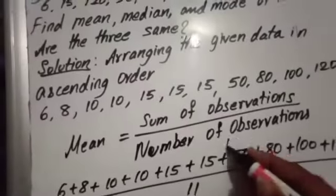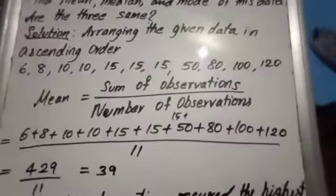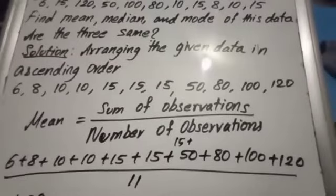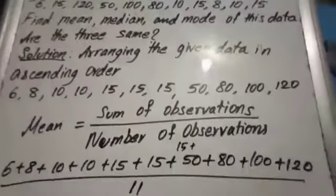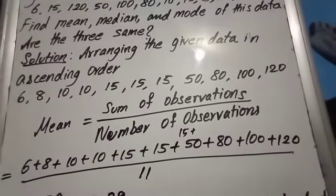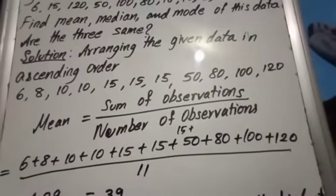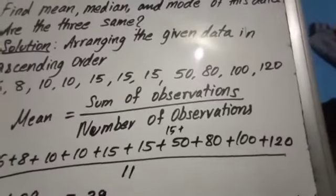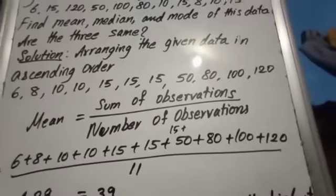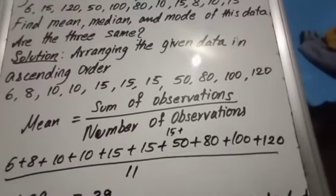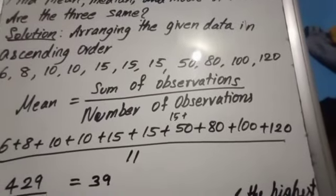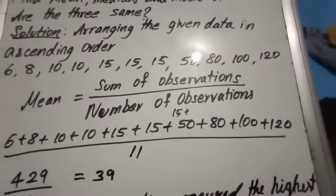Here 115 is missed out, so 15, 15, 15 plus 50. So after that we are getting the sum. 6 plus 8 is 14, plus 10 plus 10 means 20, gives 34. 34 plus 15 three times, 15 times 3 is 45. 45 plus 34 is 79.